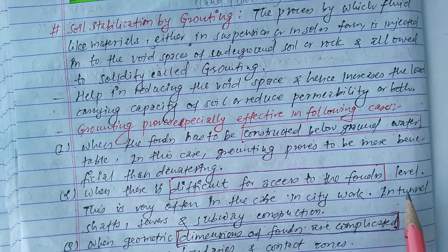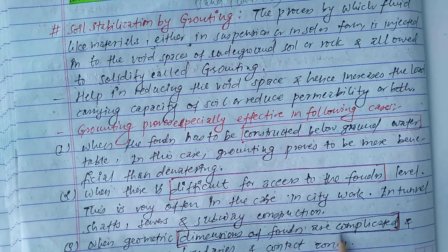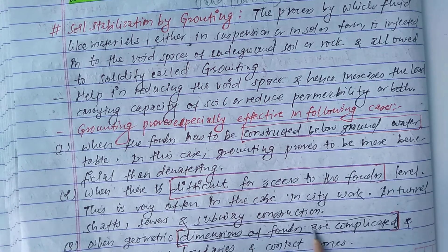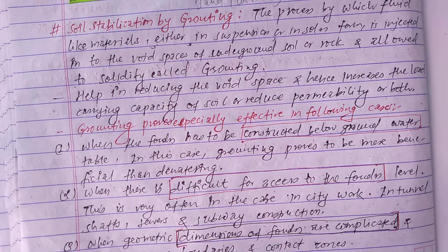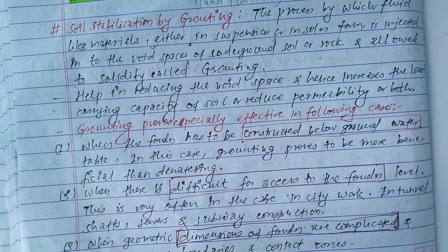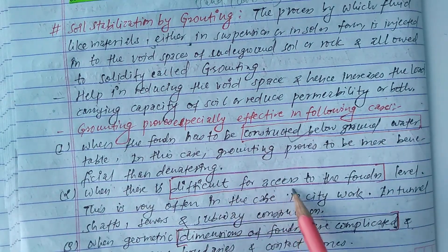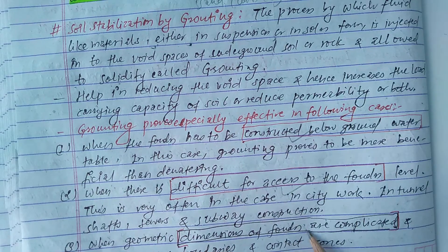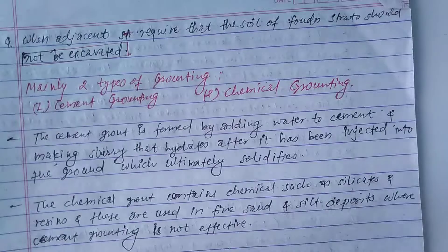Third, when the geometric dimensions of the foundation are complicated and involve many boundaries and contact zones. In such cases, grouting can be used. So grouting is especially useful when: construction is below the groundwater level, access to the foundation is difficult, or the dimensions of the foundation are complicated.